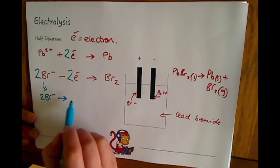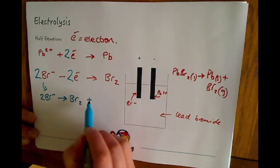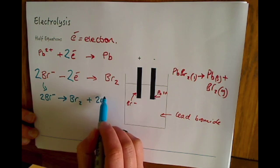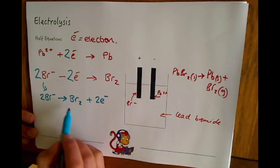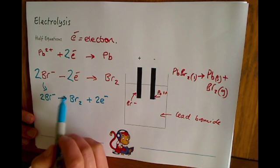You might see this written in a slightly different way because you could also write this as two Br- turning into bromine with your two extra electrons on that side. So just watch out for that, sometimes they might trick you by writing it in a slightly different way and you need to be resilient to be able to understand both of them.